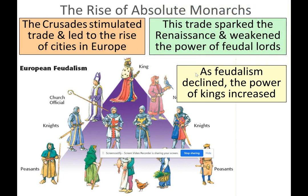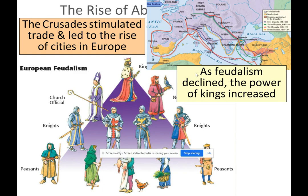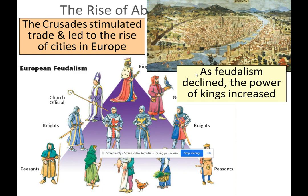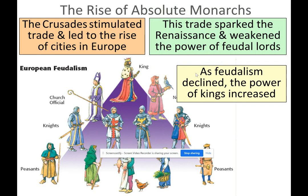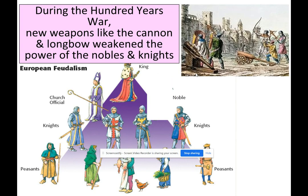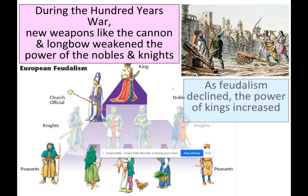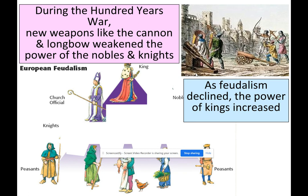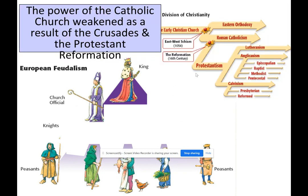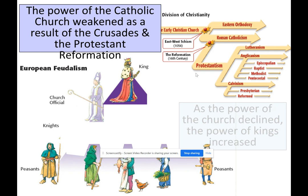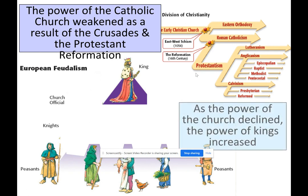That trade network brought about by the Crusades sparked the Renaissance and weakened the power of feudal lords. During the Hundred Years' War, new weapons like the cannon and longbow weakened the power of the nobles and the knights. Feudalism declined and the power of kings increased. The Catholic Church weakened, the Protestant Reformation took place, and so the power of the church declined and the power of kings increased.